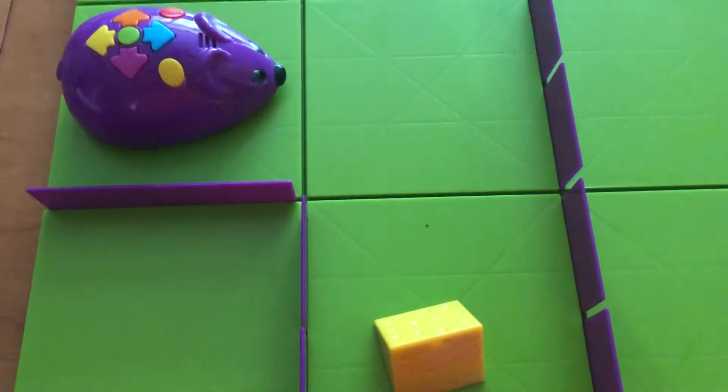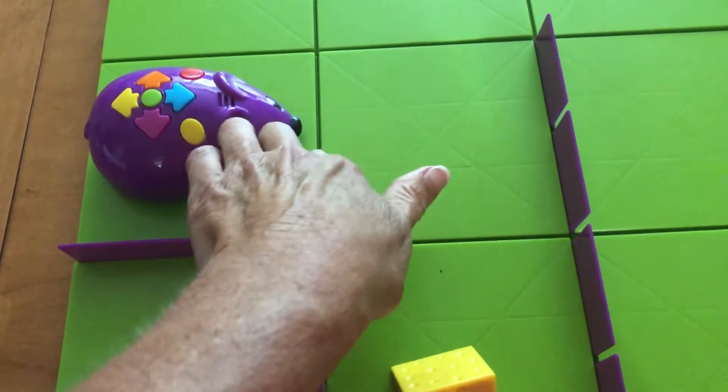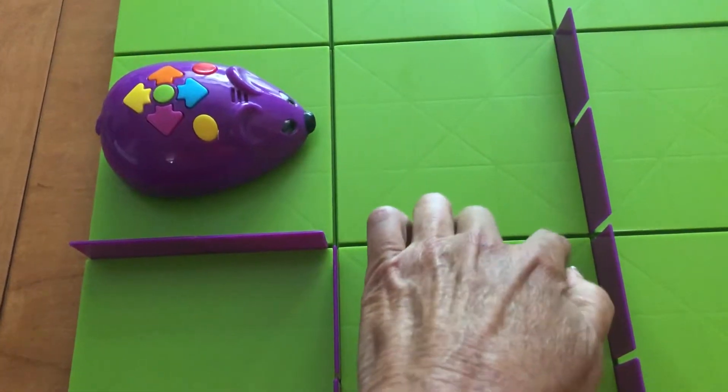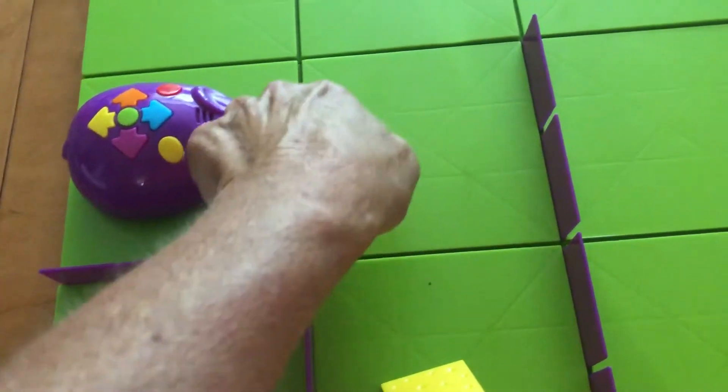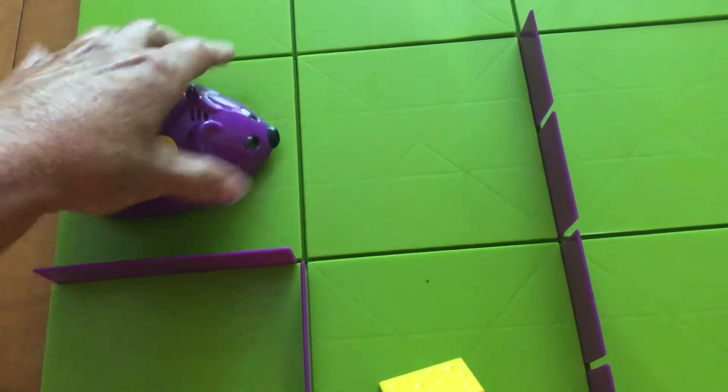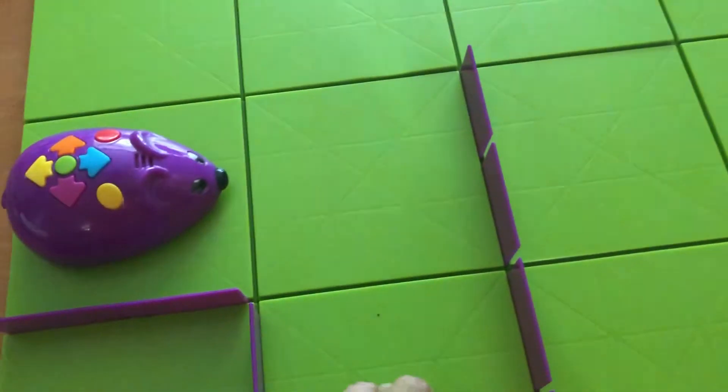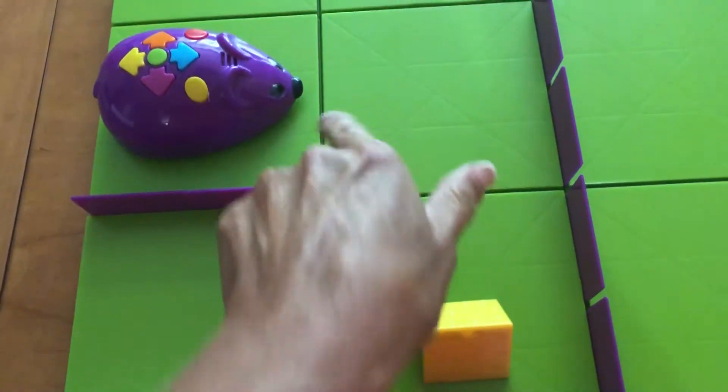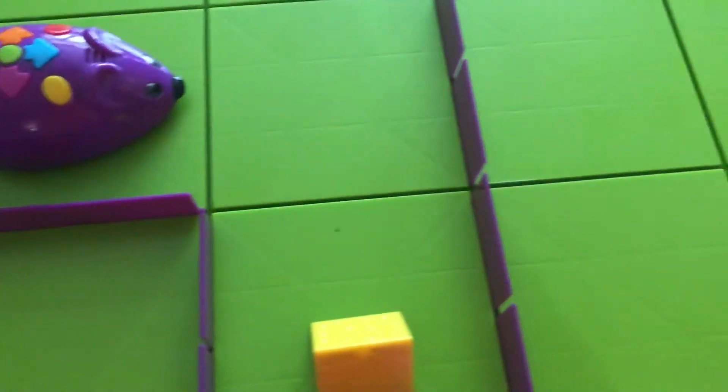Now, for my students that are visually impaired, it's really nice that the squares, you can feel the seam between the different squares. So I can find my mouse, I can find my cheese, and I can determine, oh yes, he needs to go straight.